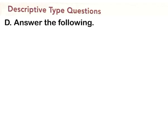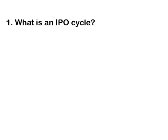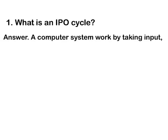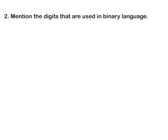Descriptive Type Questions. D. Answer the following. 1. What is an IPO cycle? Answer: A computer system works by taking input, processing it, and giving output. This is known as the IPO cycle.